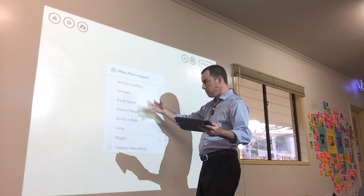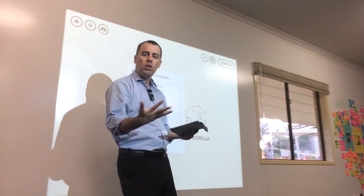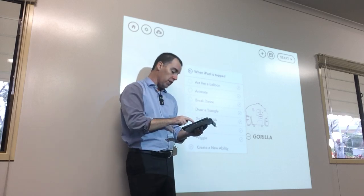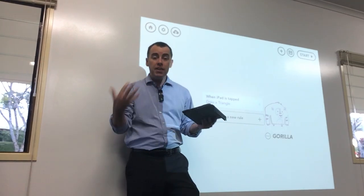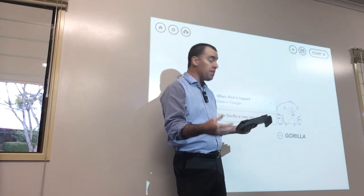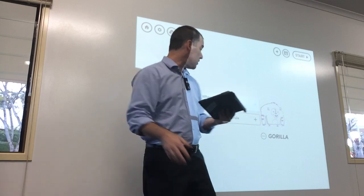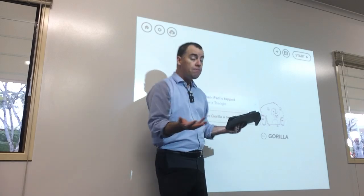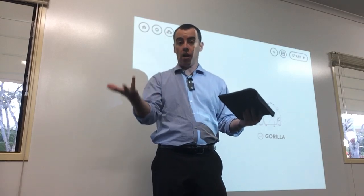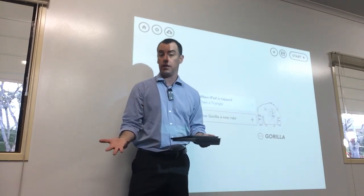You can see a range of different things have come up: act like a balloon, animate, breakdance, draw a triangle — there's a whole lot of different things. Today we're just going to select draw a triangle. So we've given it a command, we've given it an event and then we've given it a behaviour or an ability to happen when we do that. So hopefully the gorilla, when I tap the iPad, will draw a triangle. That's what we've told the iPad and the gorilla to do.